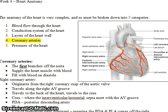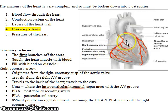Welcome to week four of Cardiac Interventional. This week we're going to be talking about the coronary arteries. The coronary arteries are the first branches off the aorta. Here's the left ventricle — the left ventricle pumps blood into the aorta, and the very first branches off the aorta are the coronary arteries.